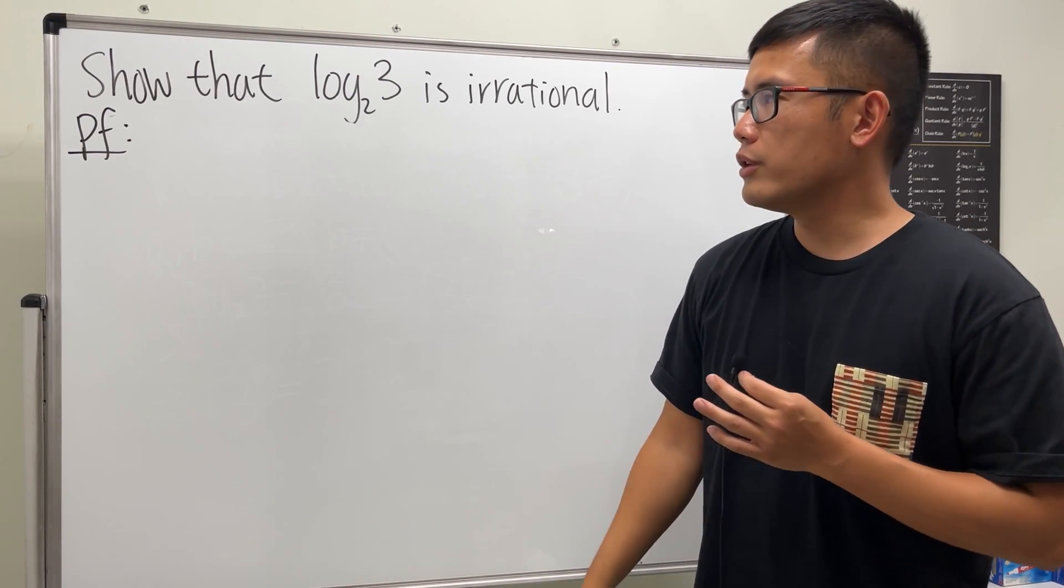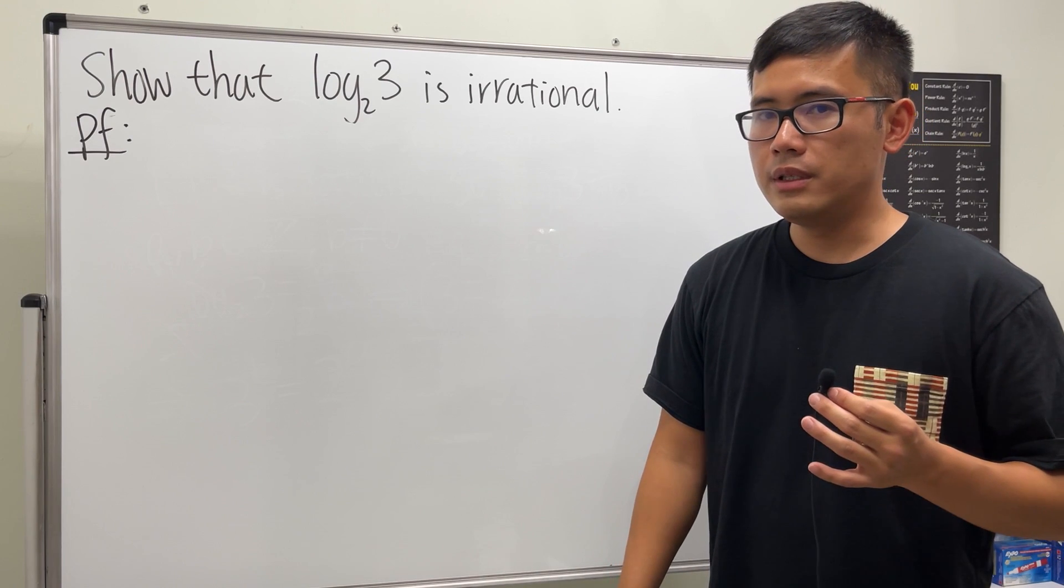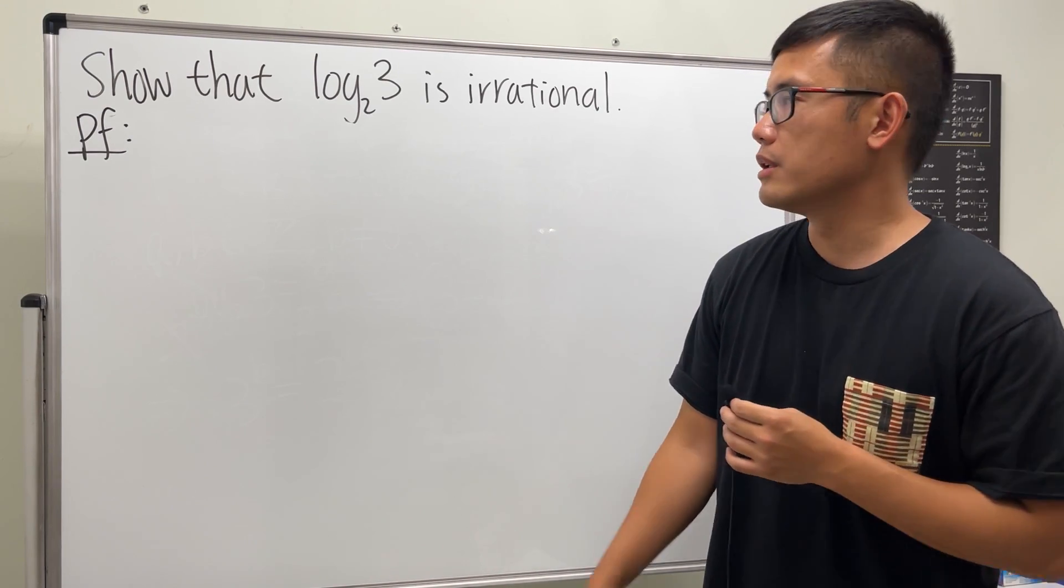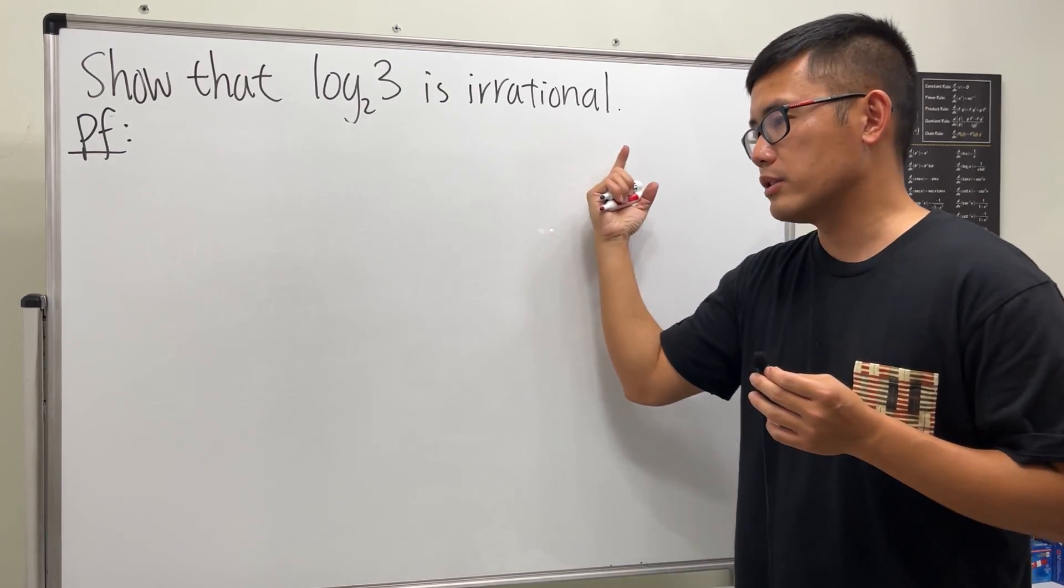In general, whenever we're trying to prove a statement that has a 'not' in it, it's usually a good idea to use contradiction. Here we're pretty much saying log base 2 of 3 is not rational, right? So that's why we use contradiction.